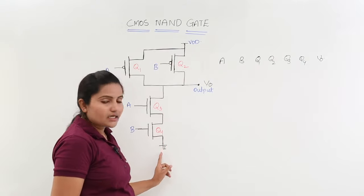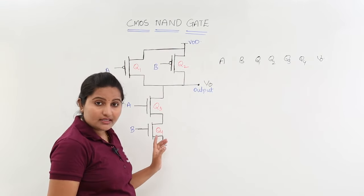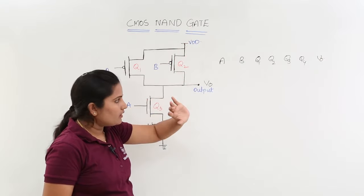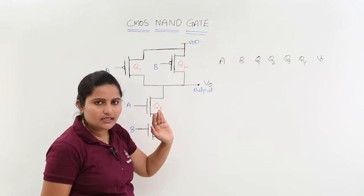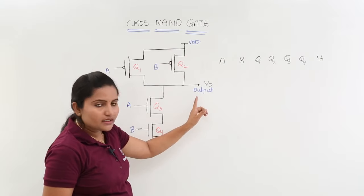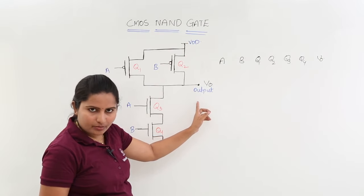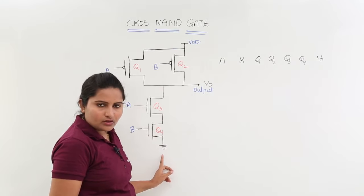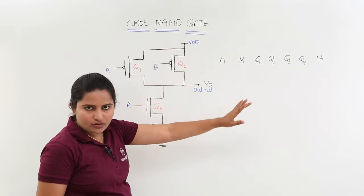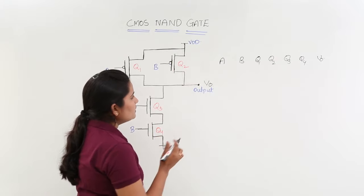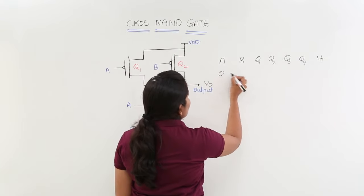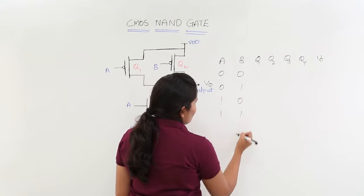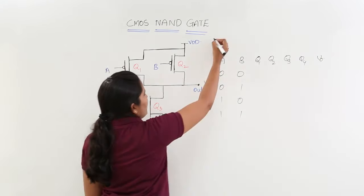Whenever your output is connected to ground, even though it is also connected to VDD, do not confuse for PMAS, NMAS and all this. Whenever you take an output in the middle, whenever it is connected to ground, even though it is connected to VDD, it will show you 0. The input combinations are 00, 01, 10 and 11.